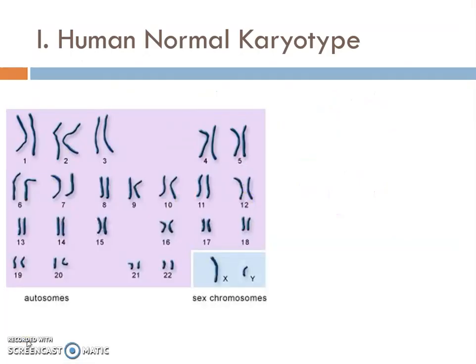When we talk about a karyotype, we have to talk about what a normal one looks like. Scientists will move the chromosomes into a particular arrangement to determine if it's normal.